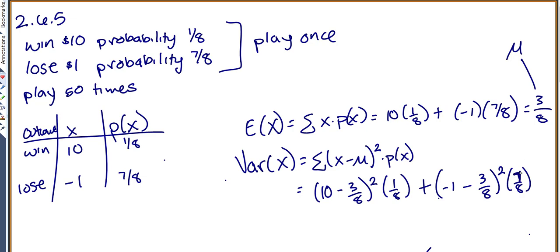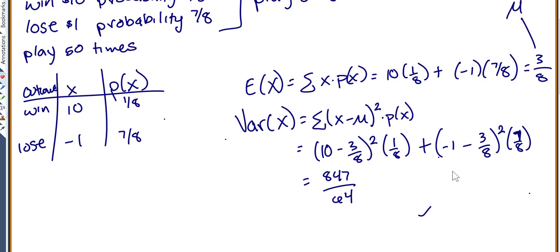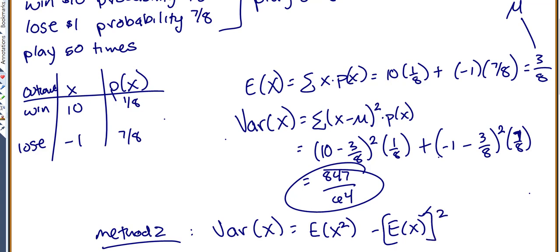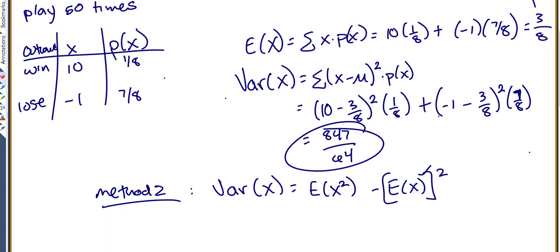That probability for minus 1 is 7/8, and the result equals 847/64. That's variance Method 1. There's another way you can do it — Method 2 — which is what the solutions manual uses. The variance can also be found by the expected value of x² minus the expected value of x, squared. We use this method because sometimes it's quicker and faster.